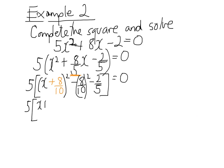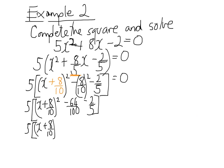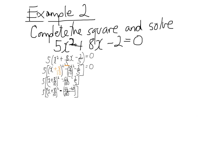Tidying up inside these square brackets, I'm going to sort out this fraction bit. I've got minus 64 over 100 minus 2 fifths. Let's get that with a common denominator of 100: minus 64 over 100, and 5 into 100 goes 20, so minus 40 over 100. So I've got 5 outside, x plus 8 over 10 squared, minus 104 over 100, in square brackets.